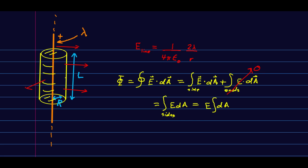Well, that is just summing up all the little area elements. And so it is nothing more than the surface area of those sides of the cylinders. And the surface area of a cylinder is just the circumference of the cylinder, 2πr times its length, which is L.